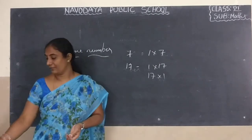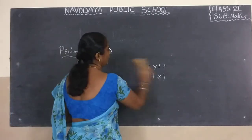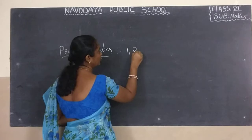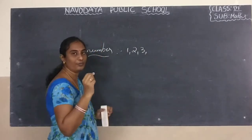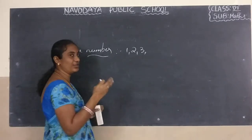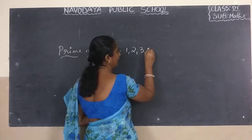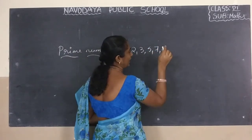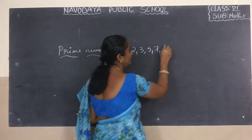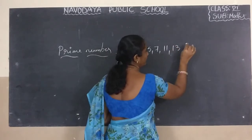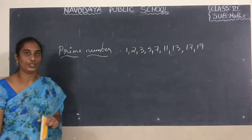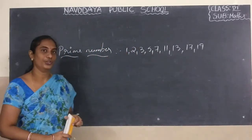What are the prime numbers between 1 to 20? 1, 2, 3 — but 4 is not a prime number because we are having more than two factors. Next: 5, 7. 8 and 9 also have factors. 10 also has more than two factors. Then 11, 13. 14, 15 have factors. Then 17 and 19. These are the prime numbers between 1 to 20.